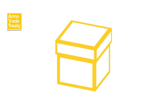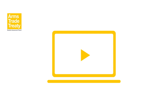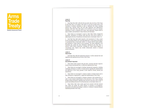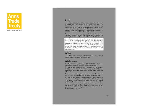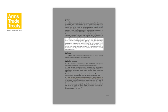ATT-BAP has developed this training package to provide online training and capacity-building tutorials to enable states to fulfill their Arms Trade Treaty, known as the ATT, annual reporting requirements. Article 13, Paragraph 3 of the ATT requires all states' parties to submit annually to the Secretariat by 31 May a report for the preceding calendar year concerning authorised or actual exports and imports of conventional arms covered under Article 2, Paragraph 1 of the Treaty.